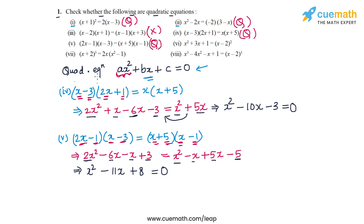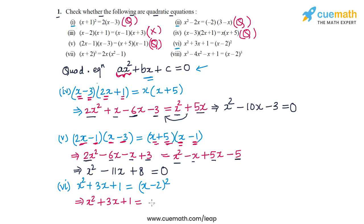In Part 6 the equation is x² + 3x + 1 = (x − 2)². Expanding the right side: x² − 4x + 4. The x² terms on both sides cancel out, and this reduces to a linear equation in x. So the equation in Part 6 is not a quadratic equation.